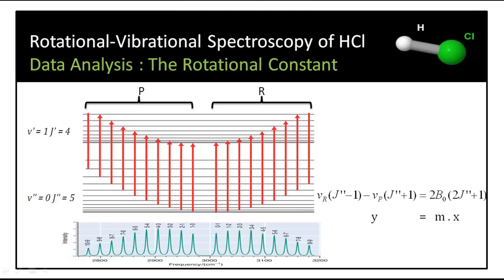Similarly, we can compute B0 bar from the similar straight line plot by examining the differences in energy between the corresponding J double prime minus 1 P and R bands. From both these plots, we can compute the B0 and B1 rotational constants.